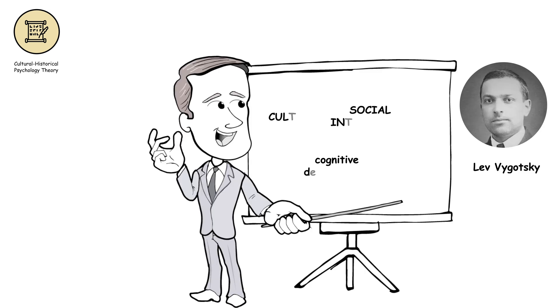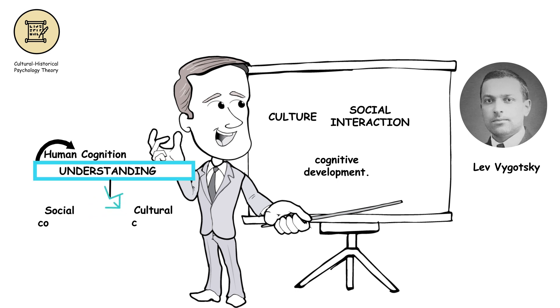Cultural historical psychology theory, associated with Lev Vygotsky, explores the role of culture and social interaction in shaping cognitive development. It emphasizes the importance of social and cultural context in understanding human cognition and behavior.